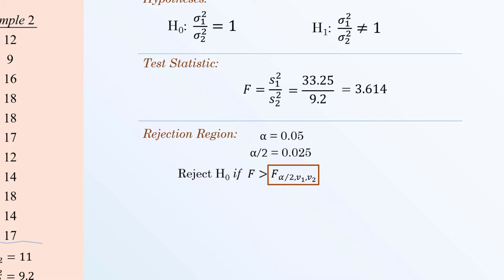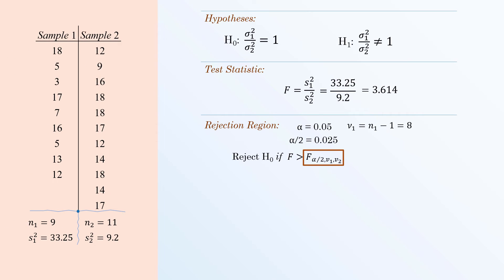Where alpha over 2 is 0.025, the numerator degrees of freedom is n1 minus 1 which equals 8, and the denominator degrees of freedom, n2 minus 1, is 10.